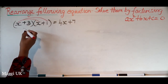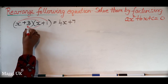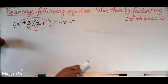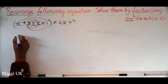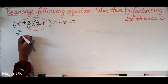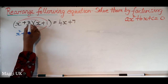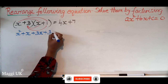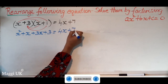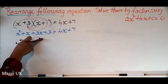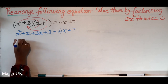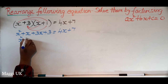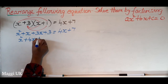I'm going to use the FOIL method to expand those brackets — go and watch my previous video if you don't know how to do this. So multiplying out we get x squared, then x times minus x, then 3 times x is 3x, plus 3. Simplifying: x squared, and 1x plus 3x is 4x, plus 3.